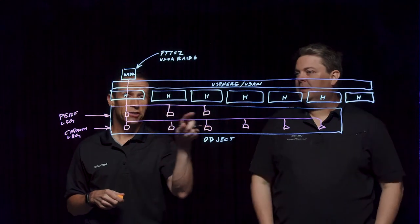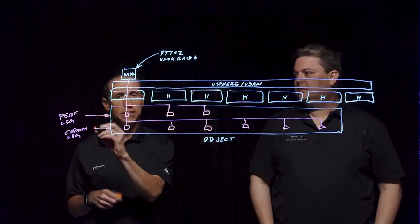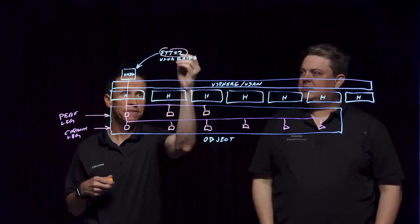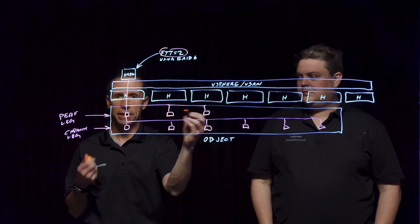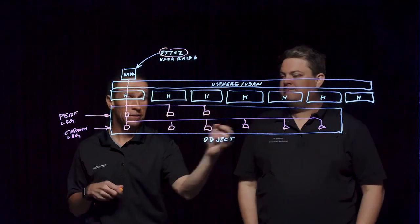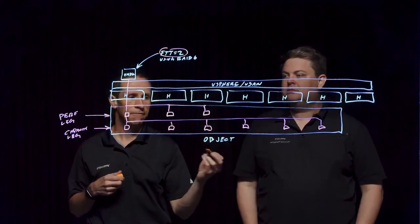One of the things we're doing with this data structure is we are protecting the performance leg and the capacity leg at that same level of resilience, the FTT equals two. In a sense, this is considered a three-way mirror, so it could tolerate a few different failures, just as the capacity leg could tolerate a few different failures.